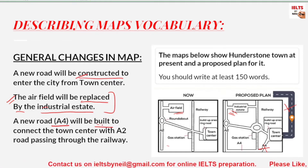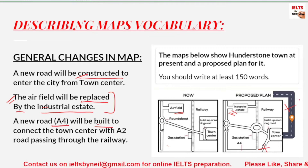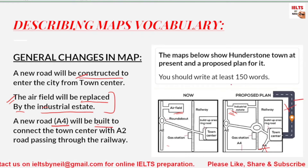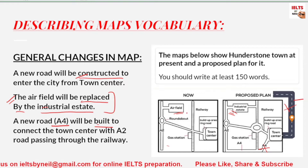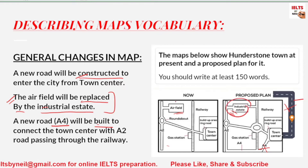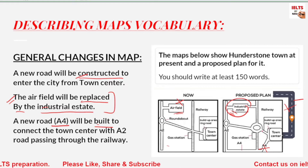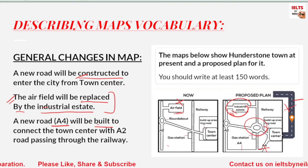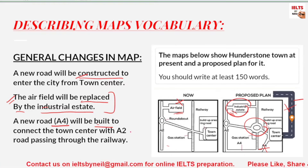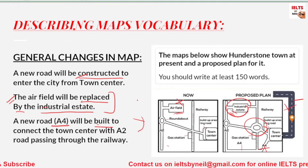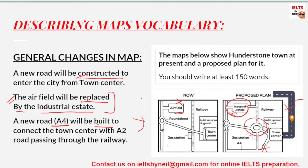You should also know words like demolished and introduced. For example, you can say 'a new road will be introduced,' or 'the industrial estate will be introduced in place of the airfield,' or 'a new roundabout will be introduced.' You should know all this vocabulary for maps. If you'd like to know more about map vocabulary, please let us know in the comments section and we will send you a PDF.